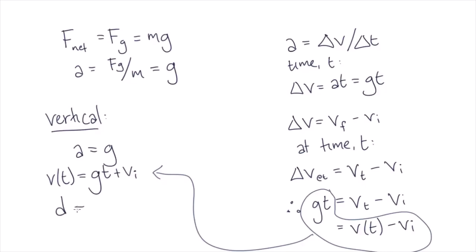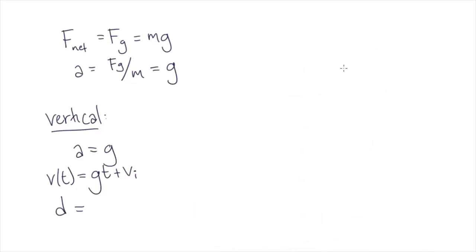So what is our vertical displacement? To find this, we can relate our velocity with our displacement, so v is equal to the change in displacement over the change in time. However, we know that our velocity is dependent on t. It is not a constant.